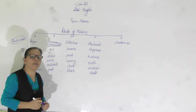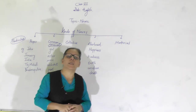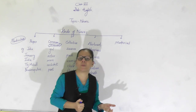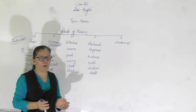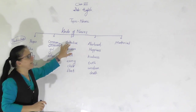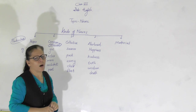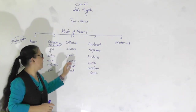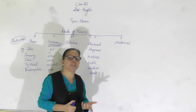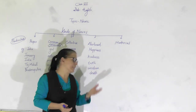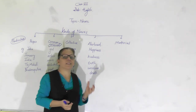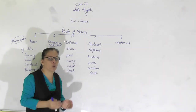Now let us see what is a collective noun. A collective noun is a noun given to a group — a group of persons, animals, or anything that acts as a whole. For example, a group of bees is called a swarm, a group of wolves is called a pack, a group of soldiers is called an army, a group of singers is called a choir, and a group of ships is called a fleet.